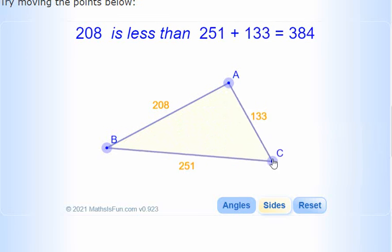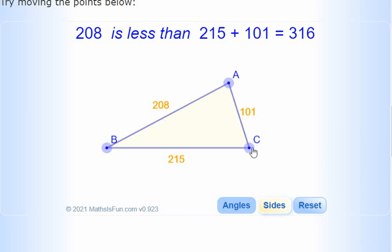So that's what we're trying to tell you. The basic rule is that any two sides of any triangle, when you add any two sides together, it has to be more than the other side.